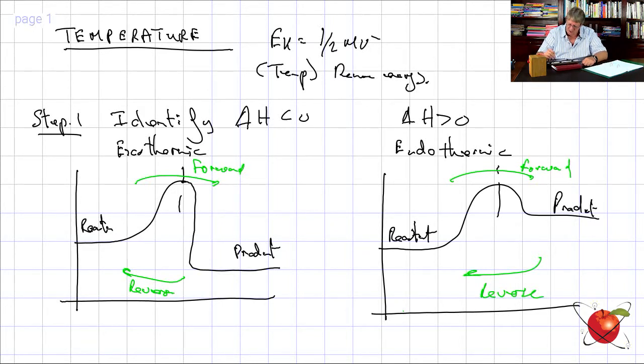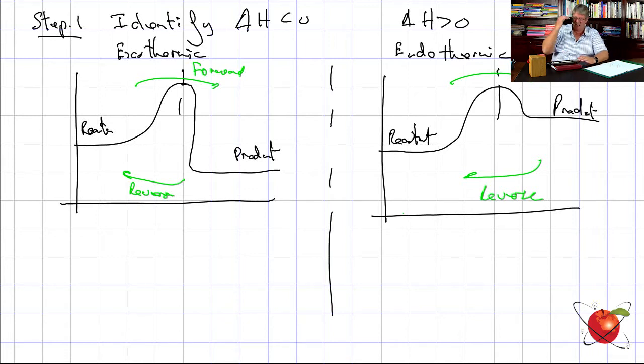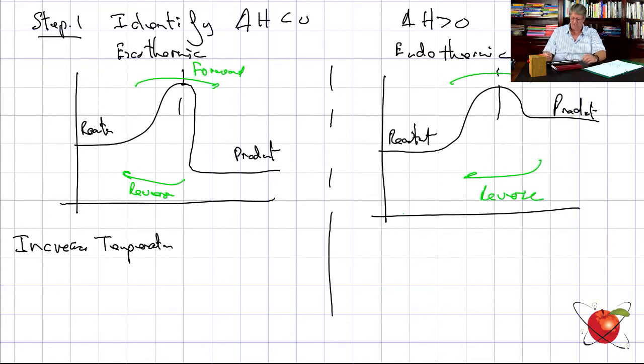Le Chatelier again — this is the temperature change. The reaction is in a closed pot and you've turned up the heat, changing one of the equilibrium conditions. The reaction will seek to do the opposite. So for an exothermic reaction, if I increase the temperature, I will favor the reverse reaction.